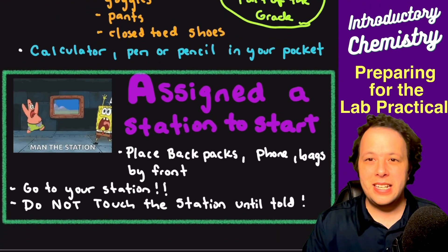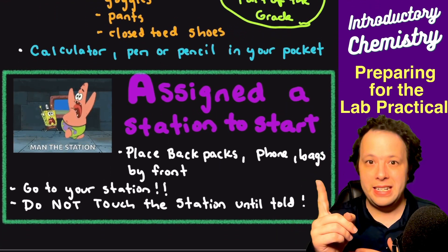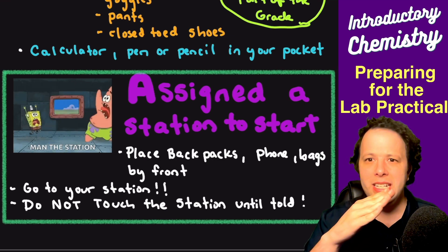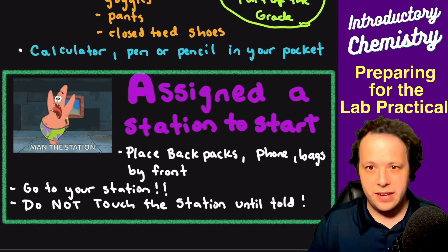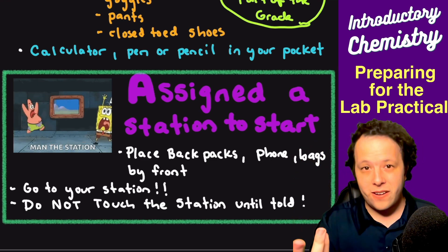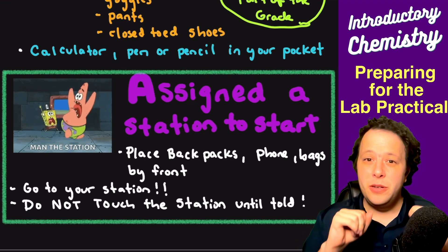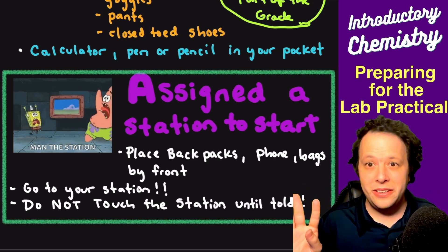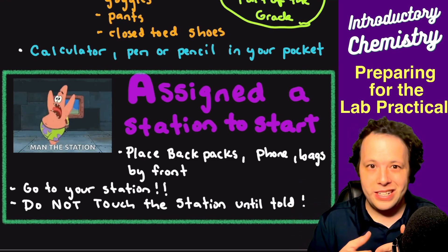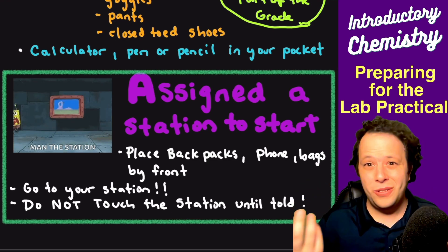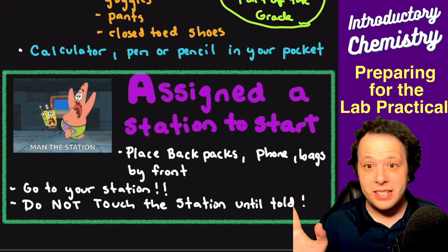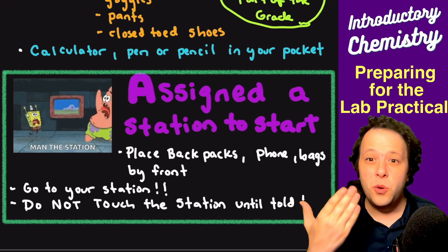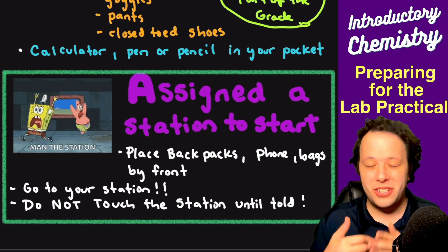When you come in, your instructor is going to let all of you in one at a time and assign you a starting position, which we refer to as a station. You're going to see stations all around the room from one through ten. You'll put your backpack at the front of the room with your phone and any bags. Then go to your station and wait until the start of the session. Do not touch anything, don't talk to anybody, just stand there ready to go.